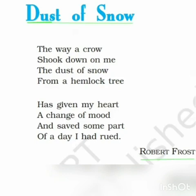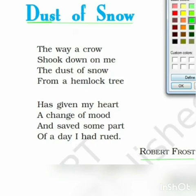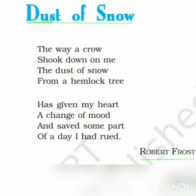Here the poet says 'the way a crow shook down on me' — the poet says that a crow had come and sat on a tree, and when it sat there on the tree that caused a movement in the branch of the tree. Out of that snow-laden branch, the snow fell onto the poet.